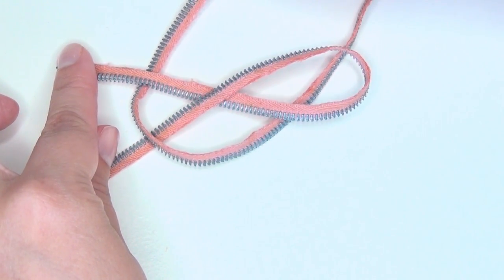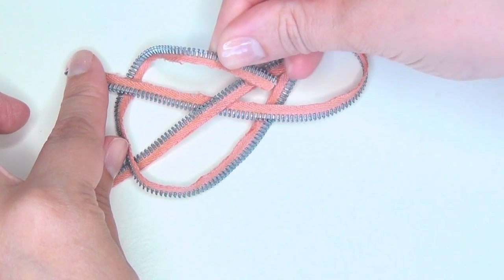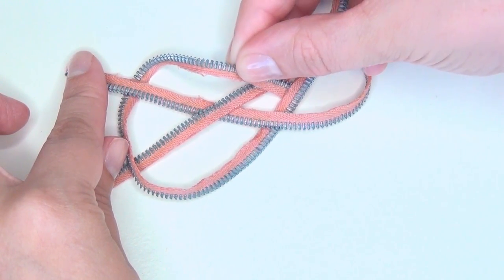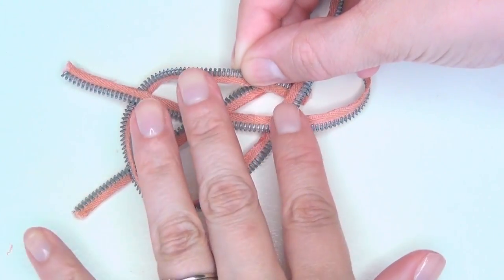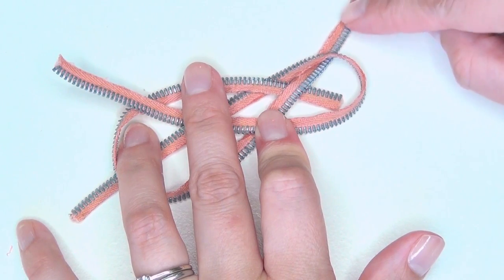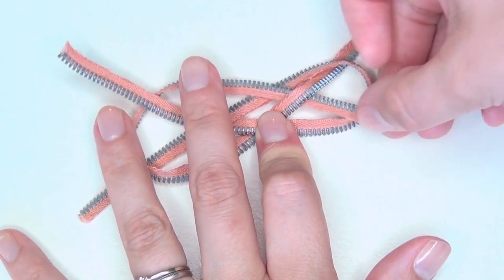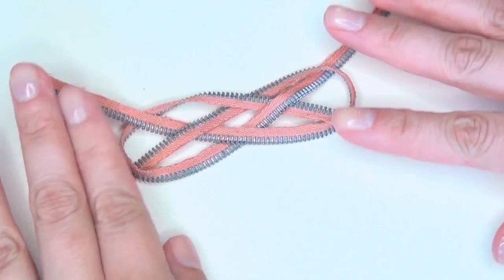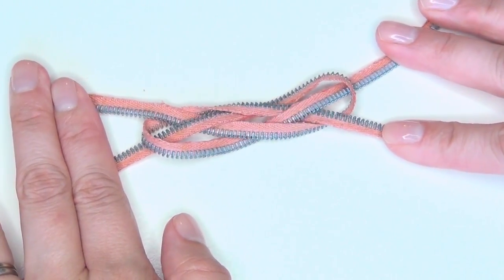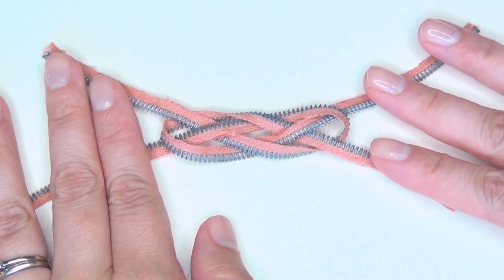Then take the very tip of the section that you've been working with and you're going to keep weaving that same section through. Pull it up and around the top of your work and then put it down through the head of your fish, underneath that other tail of the same section that you've been working and weaving through, and then pull it up and out of the head of your original fish and you should have something that looks like this.